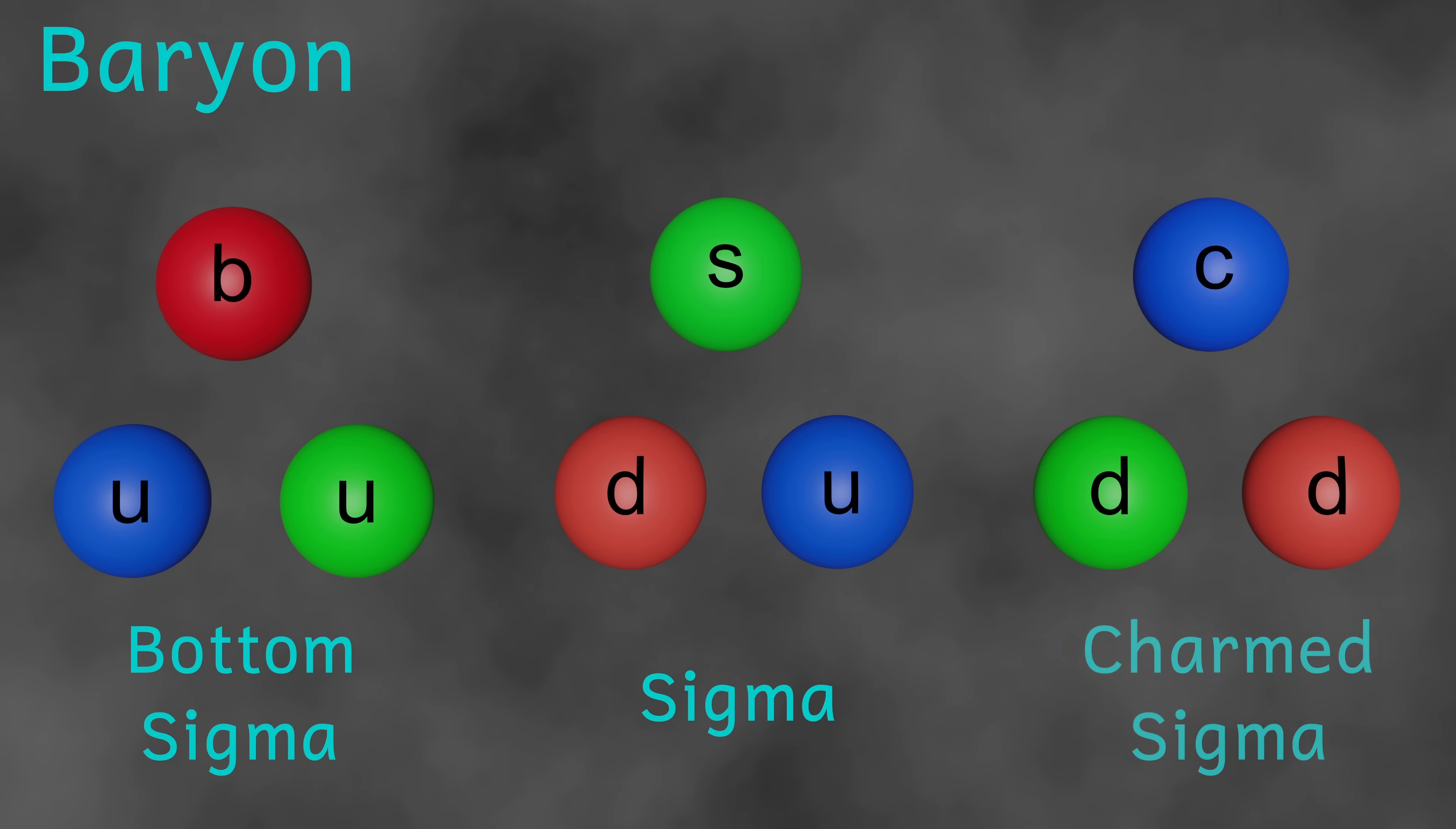Baryons are larger particles. And they're made from three quarks. Again, there are lots and lots of these. For instance, there are sigma baryons. These all contain two quarks that are either both up, both down, or one of each. The third quark that makes up the sigma baryons is one of the remaining four quarks. So there are lots and lots of possible combinations. And this is just one family of baryons.